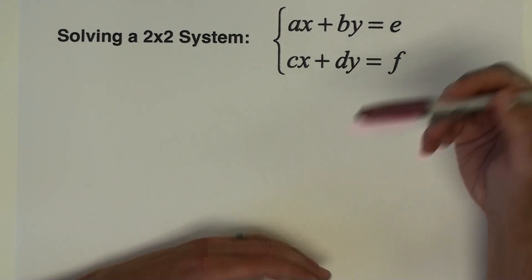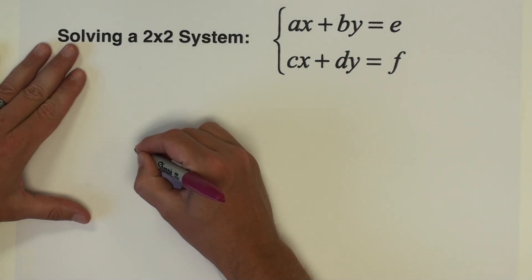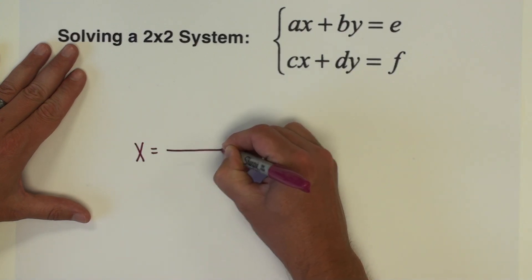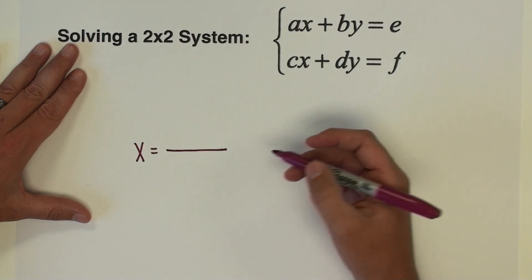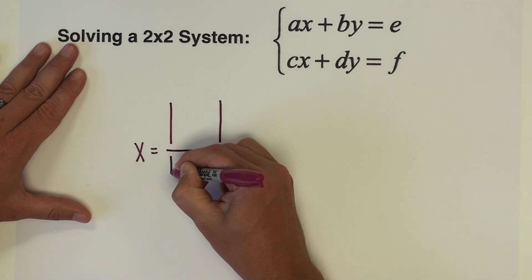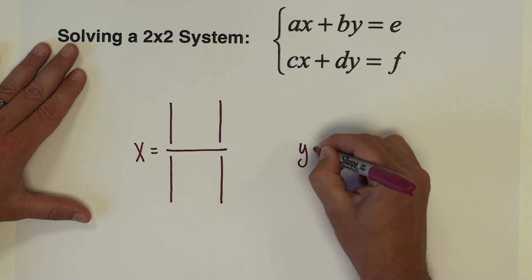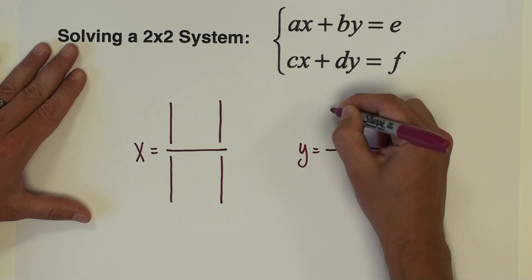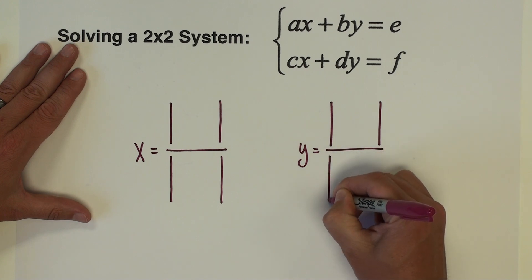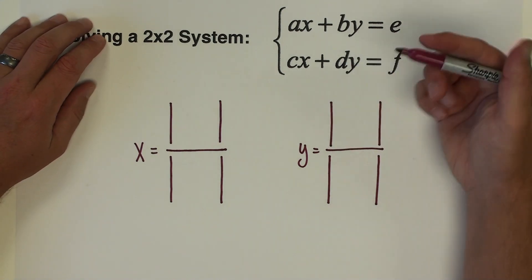For x — and it's the same for y — we are going to create a fraction of two by two determinants. There will be a two by two determinant in the numerator and a two by two determinant in the denominator. It's going to be exactly the same for y: a two by two determinant on top and a two by two determinant on bottom.